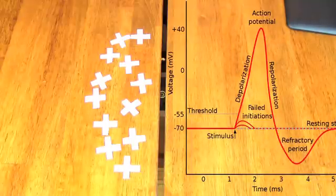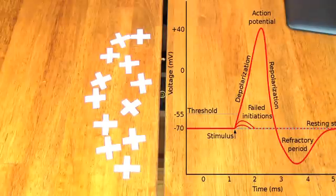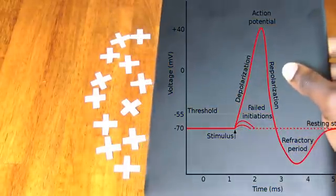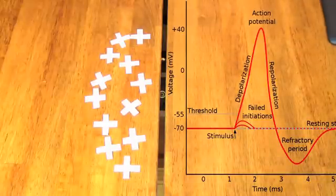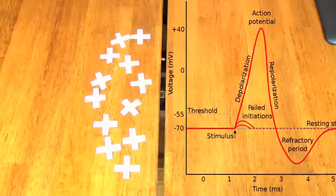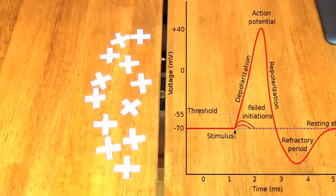So once again, when the membrane potential reaches threshold, voltage-gated sodium channels open and once those open, sodium ions are going to rush into the cell making the membrane potential more positive and that is depolarization.